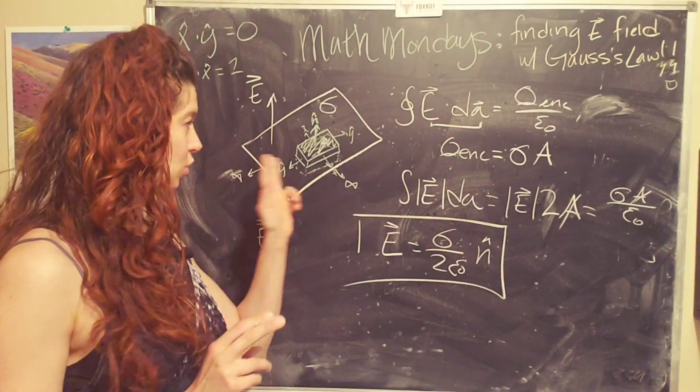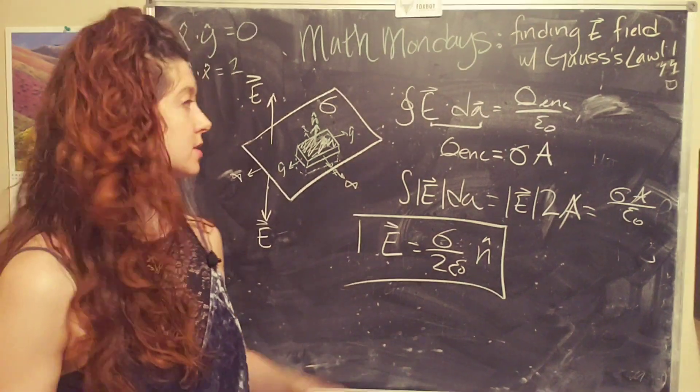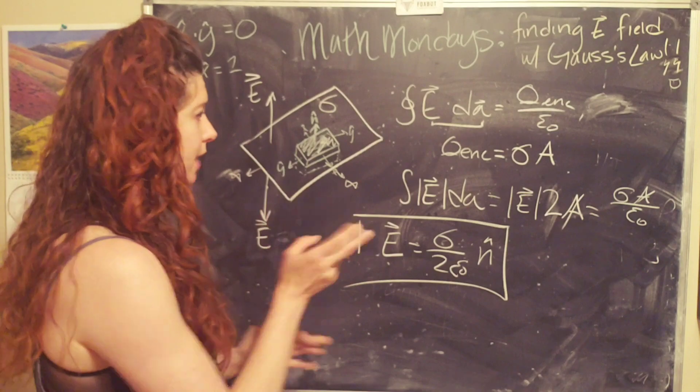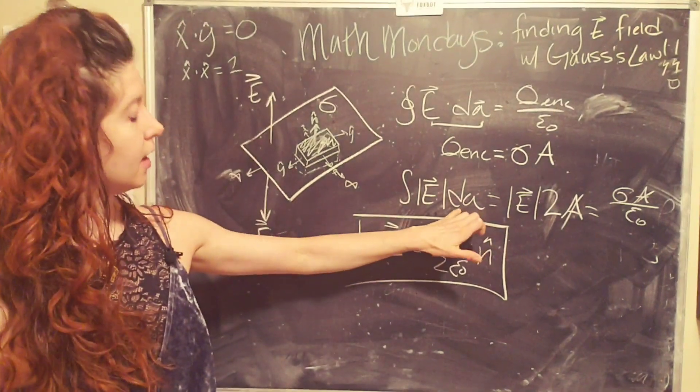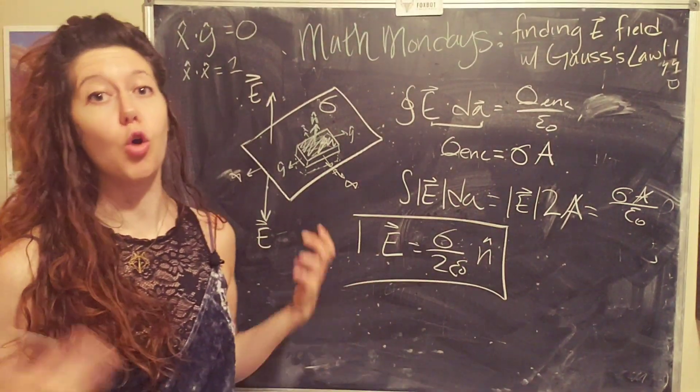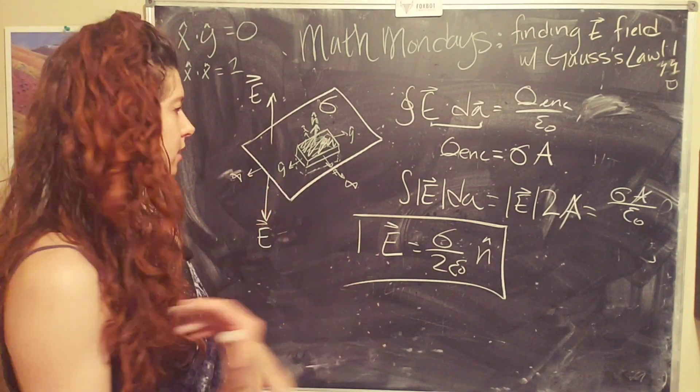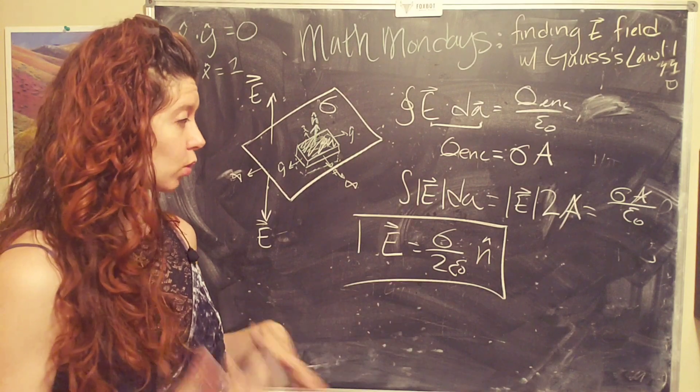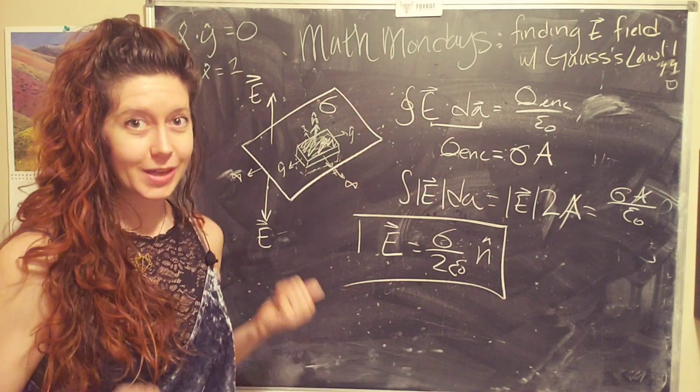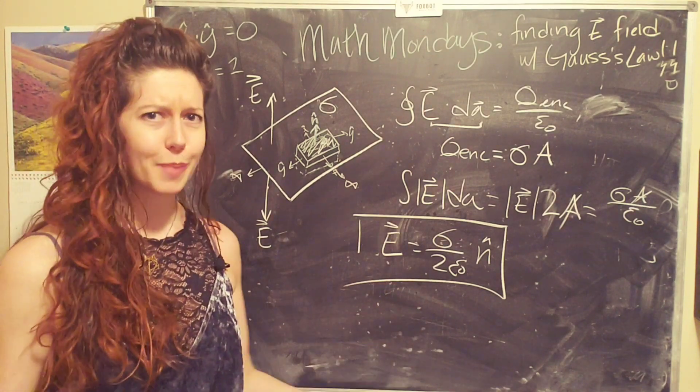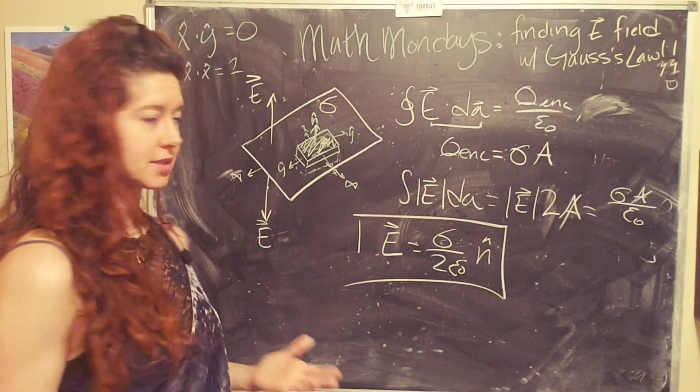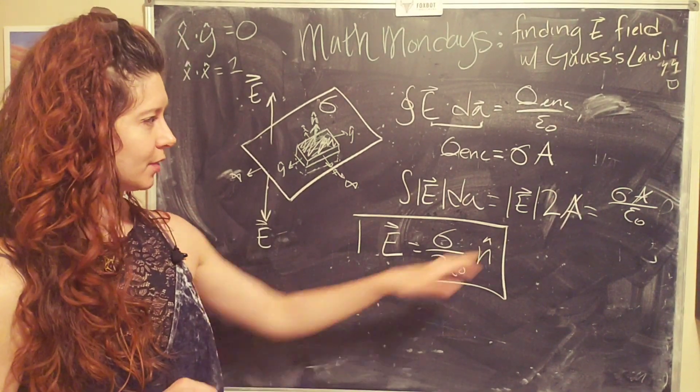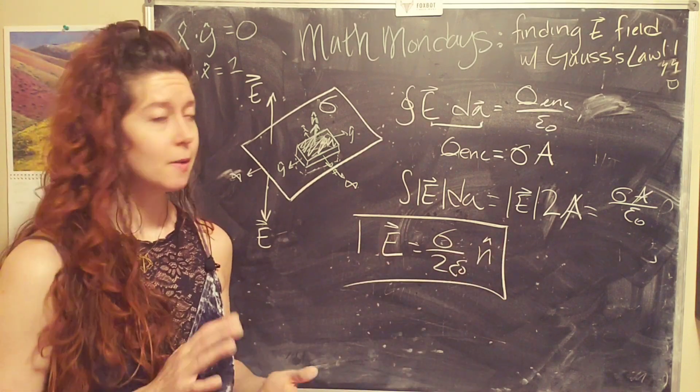The key here is drawing the Gaussian surface, doing the dot product based on the geometry, and then understanding how you're integrating over the magnitude of your dA, basically. So in this case, one of the interesting things that pops out is that, wait a second, there's no dependence on the distance that you are from this infinite plane. Hmm. The area's canceled. That's kind of funky. And there's no one over r squared.